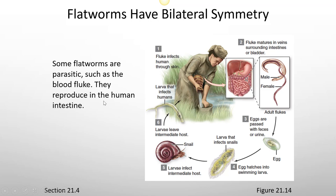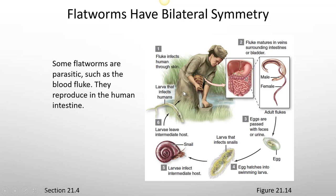The blood fluke reproduces in the human intestine. The fluke infects the human through the skin — the larvae can migrate through the human skin while a person is standing or working in snail-infested water. The fluke migrates into veins surrounding the intestines or bladder and develops into an adult fluke, then starts passing eggs. The person will shed those eggs in their feces or urine. The eggs get into the environment, back into a natural body of water, where they hatch into larvae. The larvae infect snails, grow inside the snail for a period of time, then eventually pass out of the snail — leaving the intermediate host — and go on to infect the next person.